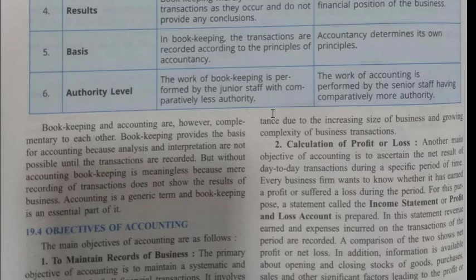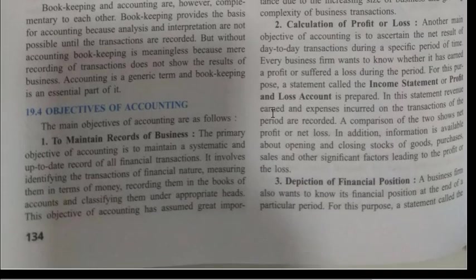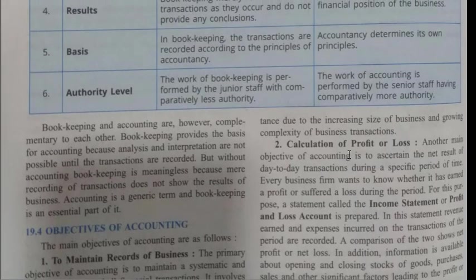Now let us see the objectives of accounting — the reasons why we do accounting. The first objective is to maintain a record of business. The primary objective of accounting is to maintain a systematic and up-to-date record of all financial transactions. It involves identifying transactions of a financial nature, measuring them in terms of money, recording them in the books of accounts, and classifying them under appropriate heads. This objective has assumed great importance due to the increasing size and growing complexity of business transactions.